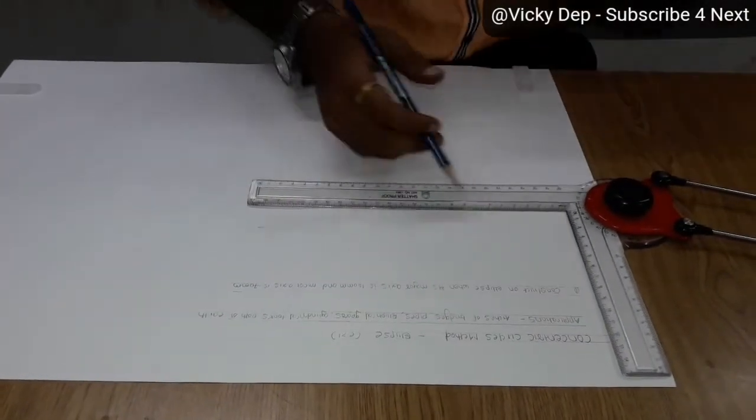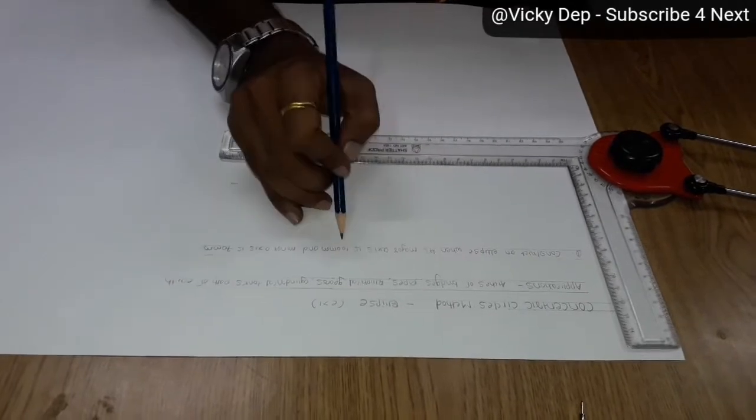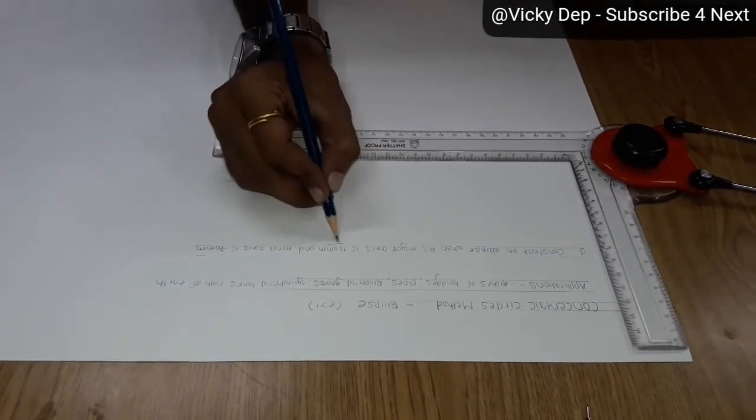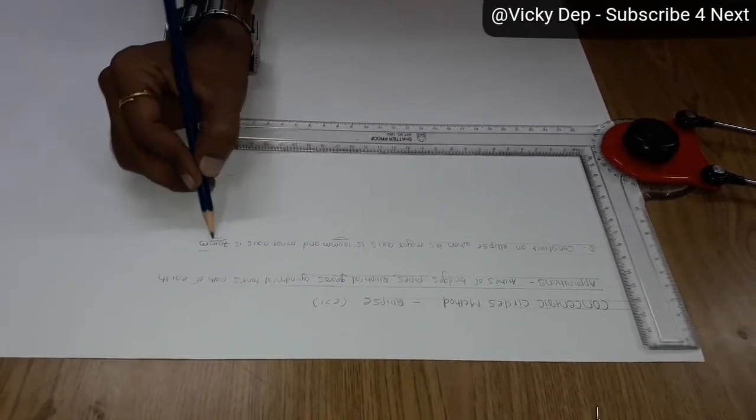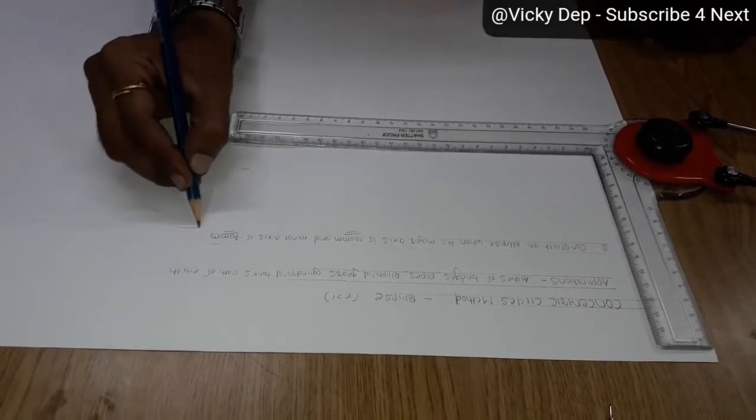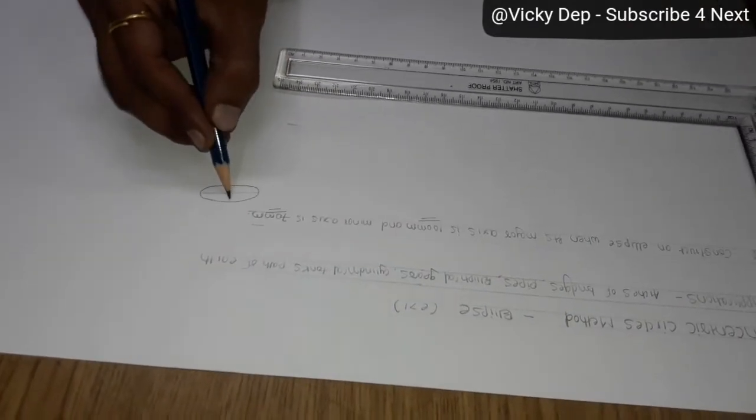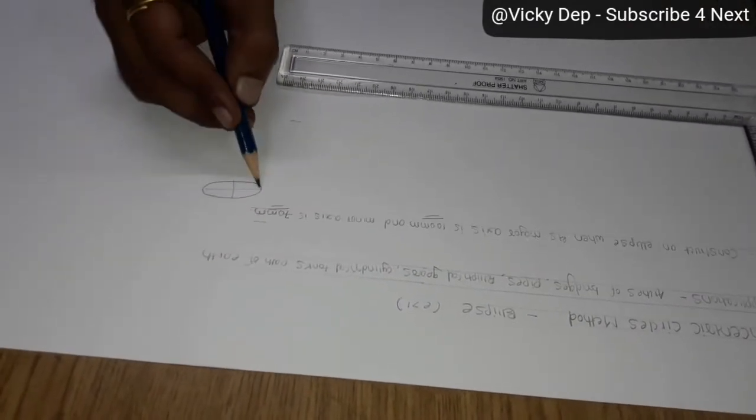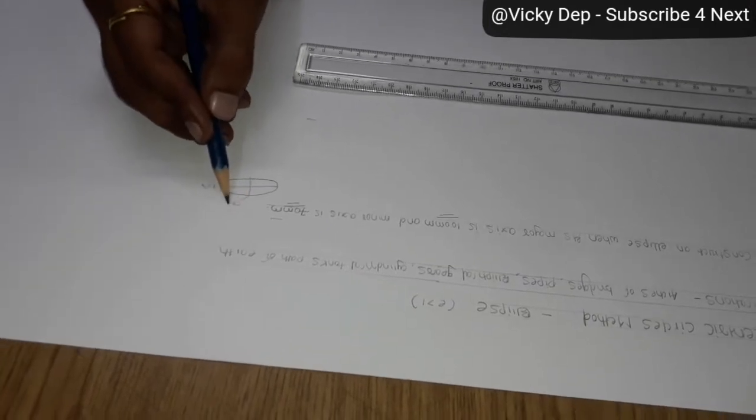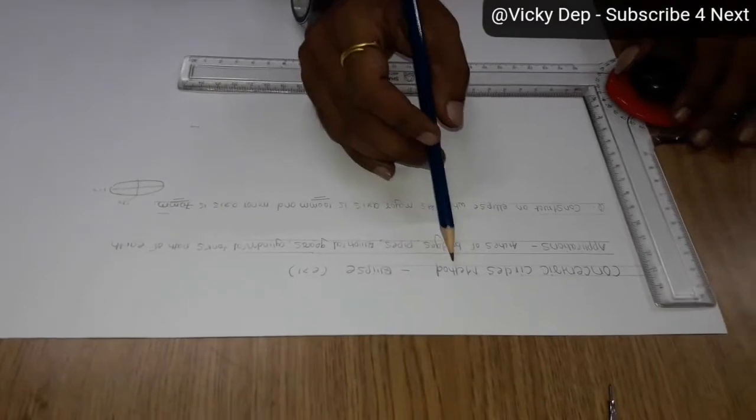So how question comes in exam? Construct an ellipse when its major axis is 100 mm, major axis is 100 mm and minor axis is 70 mm. How ellipse comes? Now see this. It has two axis like this is the major axis and this is the minor axis. They have given this is 100 and this is 70 mm. So we have to draw by procedure using concentric circle methods.